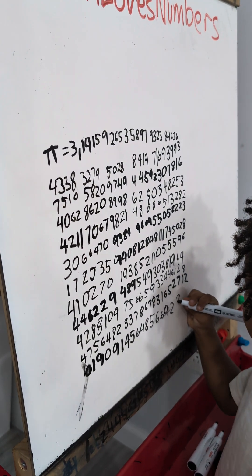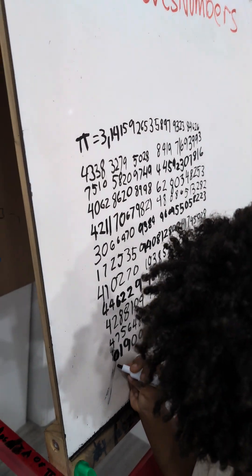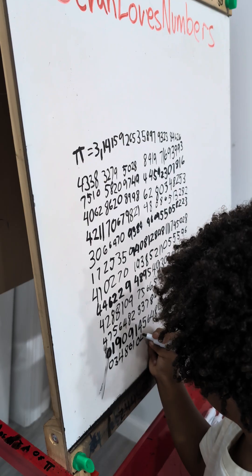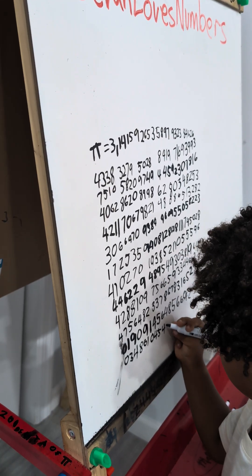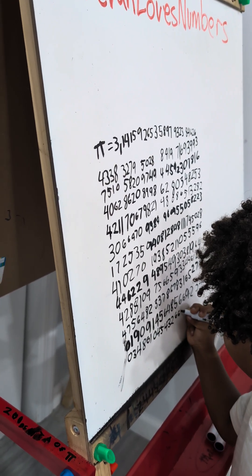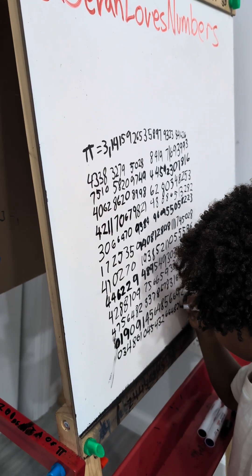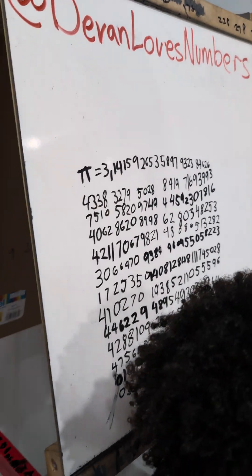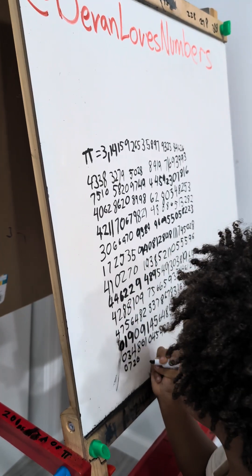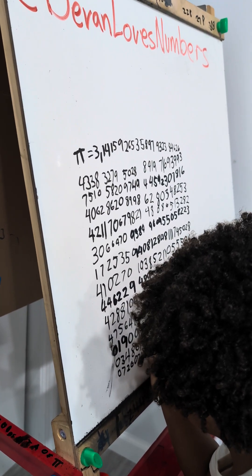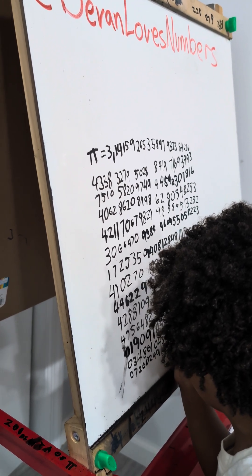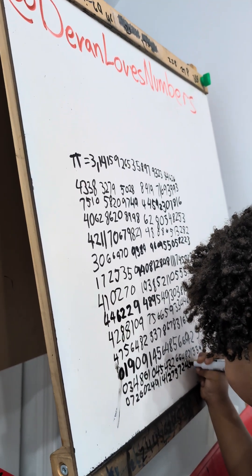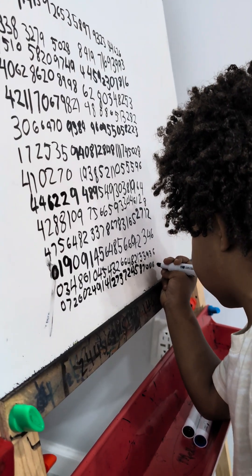9, 2, 3, 4, 6, 0, 3, 4, 8, 6, 1, 0, 4, 5, 4, 3, 2, 6, 6, 4, 8, 2, 1, 3, 3, 9, 3, 6, 0, 7, 2, 4, 2, 6, 0, 2, 4, 9, 1, 4, 1, 2, 7, 3, 7, 2, 4, 5, 8, 7, 0, 0, 0, 0, 0, 0, 6, 6.